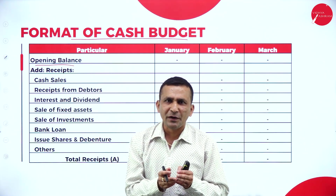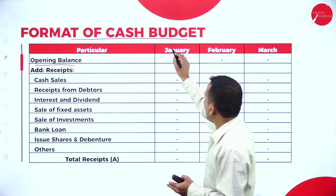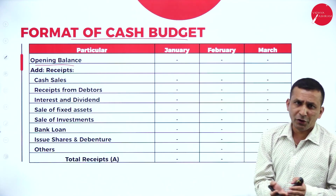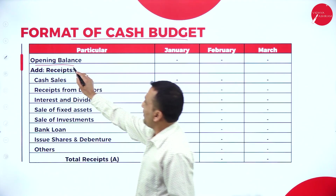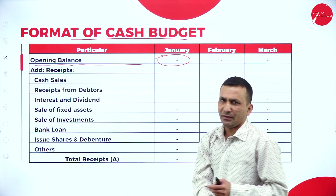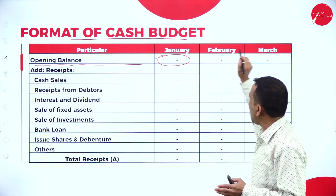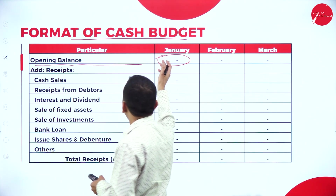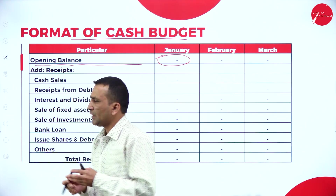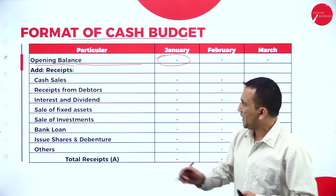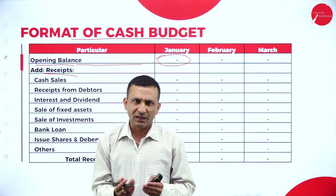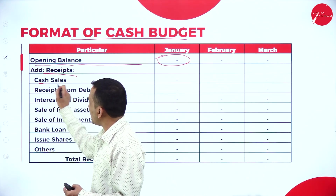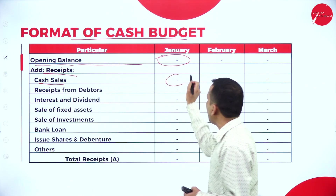The opening balance — if they are asking to prepare for three months, we need to write for Jan, Feb, March. If they are asking for six months, Jan to June, you have to extend the column. The opening balance is written first for the January column because you are preparing a three-month cash budget starting from January. Once the opening balance is entered, we immediately add receipts — how you are receiving cash, which is nothing but cash inflow. You are receiving cash because of cash sales.